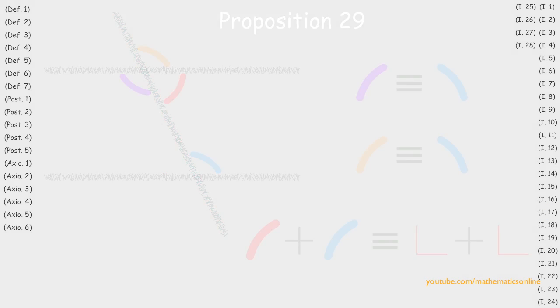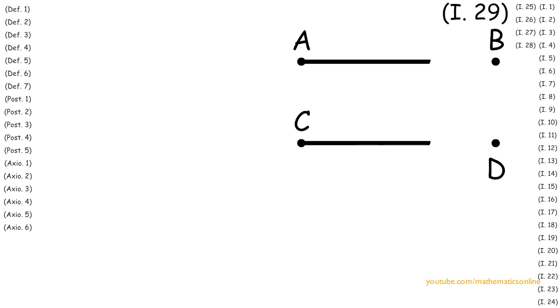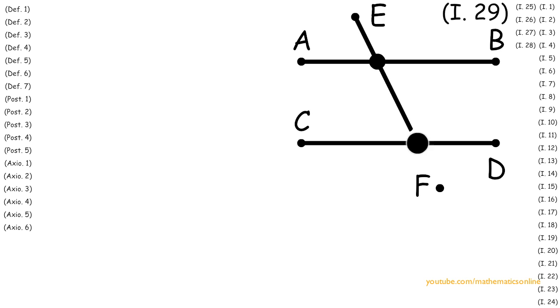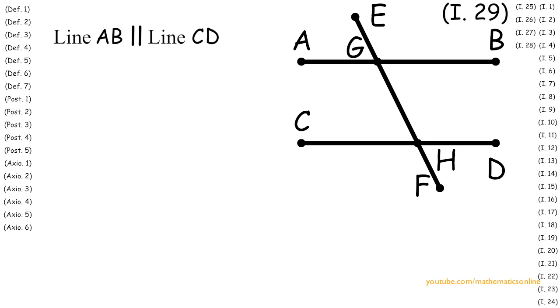To begin, we are given line AB and line CD, with line EF intersecting both lines. We are also given that line AB is parallel to line CD.